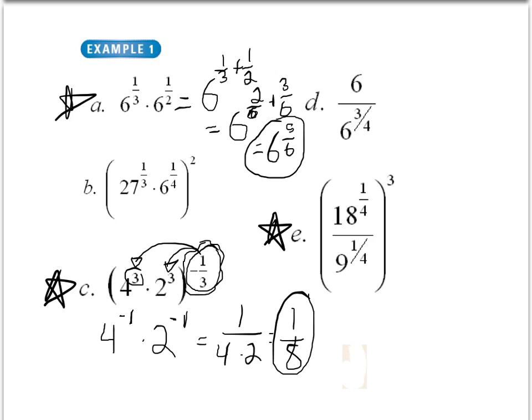Okay, so for this one, since both of these terms are being raised to the same exponent, what we want to do is we want to have this 18 over 9, but then we want to have this 1 fourth outside. You can probably already start to see where this is going to simplify out.